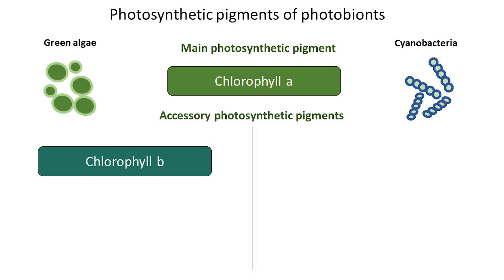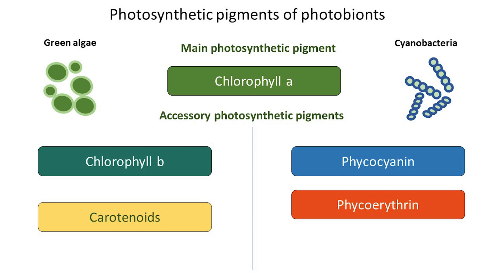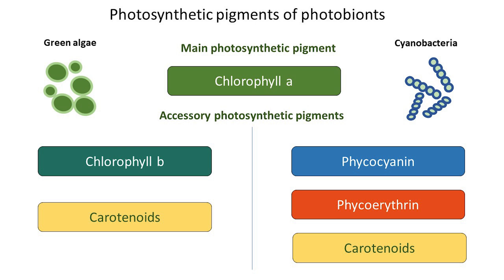Most often, green algae have chlorophyll B and carotenoids in addition to chlorophyll A. Cyanobacteria produce accessory photosynthetic blue and red pigments known as phycobilins, which enable cyanobacteria to grow under low light conditions. They also produce carotenoids, which act as protective agents against photo-oxidative damage.